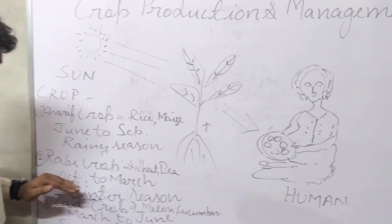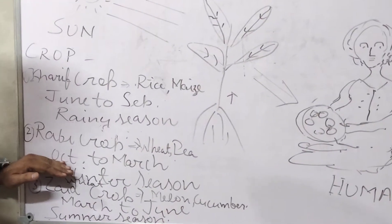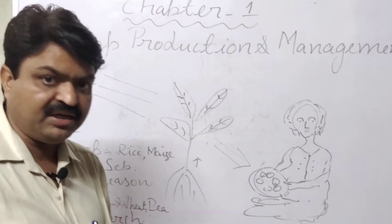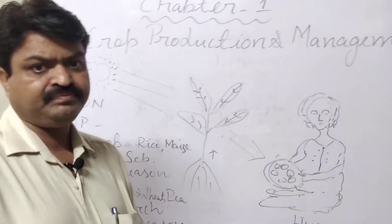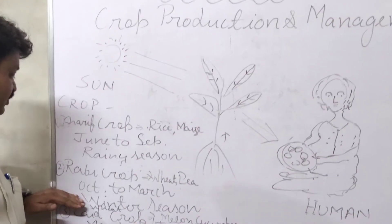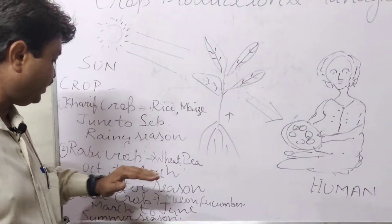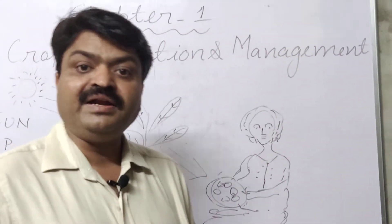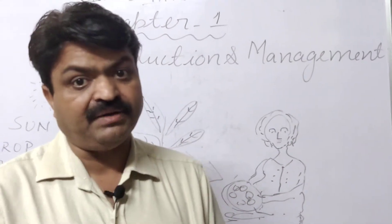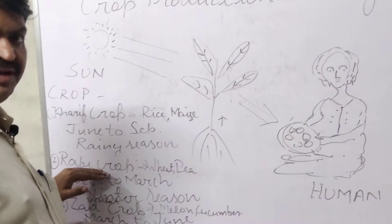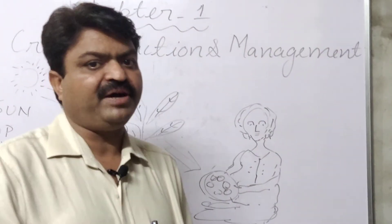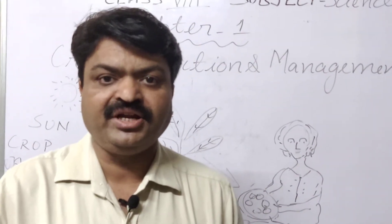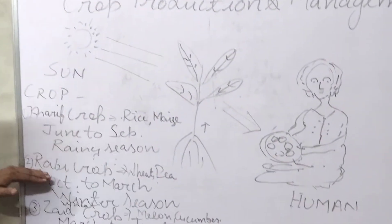The second type is Rabi crops — crops that are grown and cultivated between October and March. These are also known as winter season crops. Examples include wheat, pea, and gram. Nowadays the harvesting of wheat is going on, and wheat belongs to the category of Rabi crops.